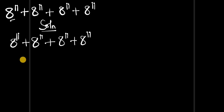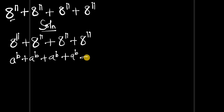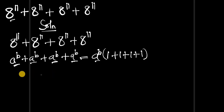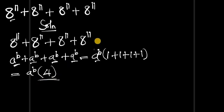Now, let's consider this identity: if you have a to the power of b, plus a to the power of b, plus a to the power of b, plus a to the power of b, you can factor out a to the power of b. Dividing each term by a to the power of b gives 1 + 1 + 1 + 1 = 4. So this simply gives you a to the power of b, times 4. That is the identity we are going to apply here.